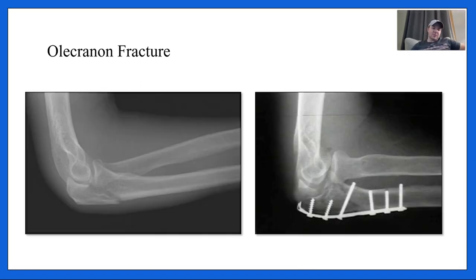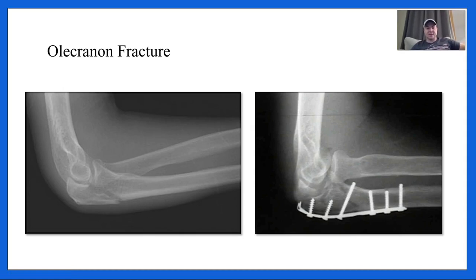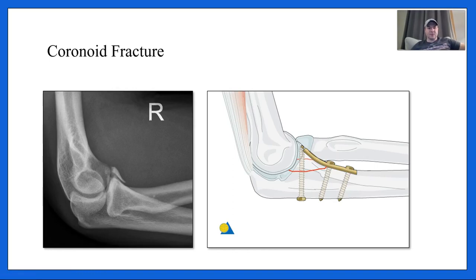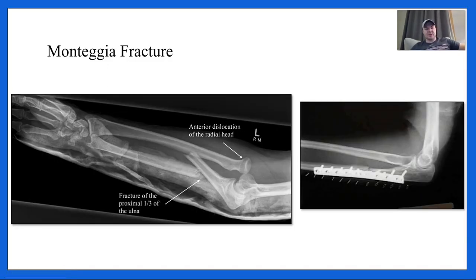Olecranon fractures can be identified by the fracture line on the ulna, fixed with three screws above and three below the fracture line for stabilization. Coronoid fractures can occur during elbow dislocation when a posterior force drives the ulna backward and the tip hits the distal humerus. A Monteggia fracture involves a proximal third ulna fracture combined with radial head dislocation — a fracture-dislocation where one bone fractures and the other dislocates.